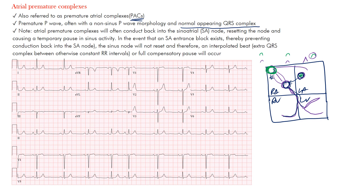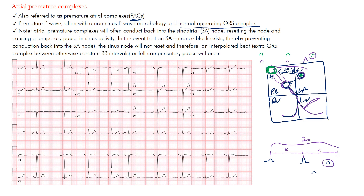The P wave conducts down antegradely, but there's also retrograde conduction that actually resets the sinus node. As a result, it can cause a non-compensatory pause. If you have a normal P wave and then your atrial premature contraction, normally the next beat would come at the expected interval, but it comes earlier. Then you have another normal P wave that follows. The total interval here is 2x, meaning the beat is coming early — that's what we call a non-compensatory pause, because the sinus node is being reset.